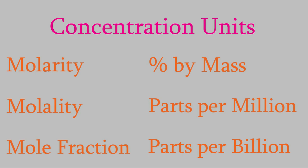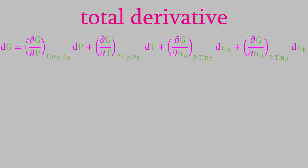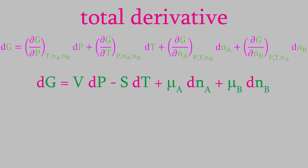Now that we've talked about concentration units, let's delve more deeply into what happens when a solute and solvent interact. For now, we'll just look at binary solutions — solutions that consist of just one solute and one solvent — where both are liquids. Suppose we have a solution consisting of two liquids, liquid A and liquid B, and we'd like to determine the Gibbs free energy of this solution. As we saw in video 29, we can calculate the Gibbs free energy by taking the total derivative with respect to the independent variables: pressure, temperature, and the number of moles of each component. Those partial derivatives give us the volume, the negative of the entropy, and the chemical potentials of liquids A and B.